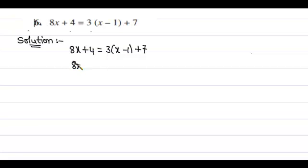Therefore, 8x + 4 = 3x - 3 + 7, which simplifies to 8x + 4 = 3x + 4.